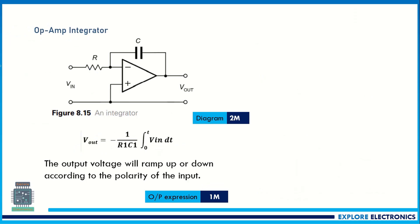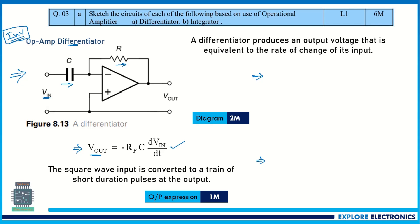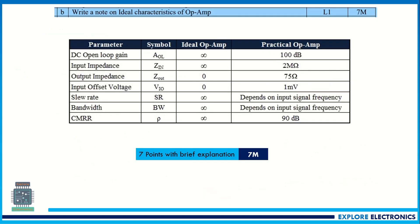Similarly, you can explain the integrator. The integrator circuit is also based on the inverting configuration, where the feedback resistor is replaced by a feedback capacitor. If you derive the expression for Vout, it is the integration of Vin with respect to dt, and we get the output in terms of −(1/R1C1) × ∫Vin dt. This is the inverting terminal where we apply Vin. If you apply a square wave, the output will be a ramp. This is sufficient for 6 marks — differentiator for 3 marks and integrator for 3 marks — along with the waveforms.